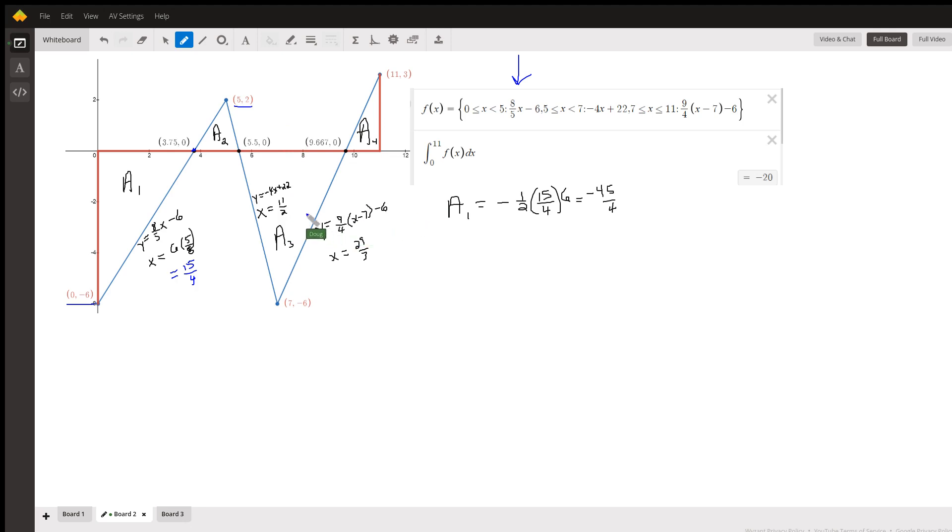You end up with y equals negative 4x plus 22 if you put it in slope-intercept form. And when y is 0, x is 11 halves, there's that point of intersection.